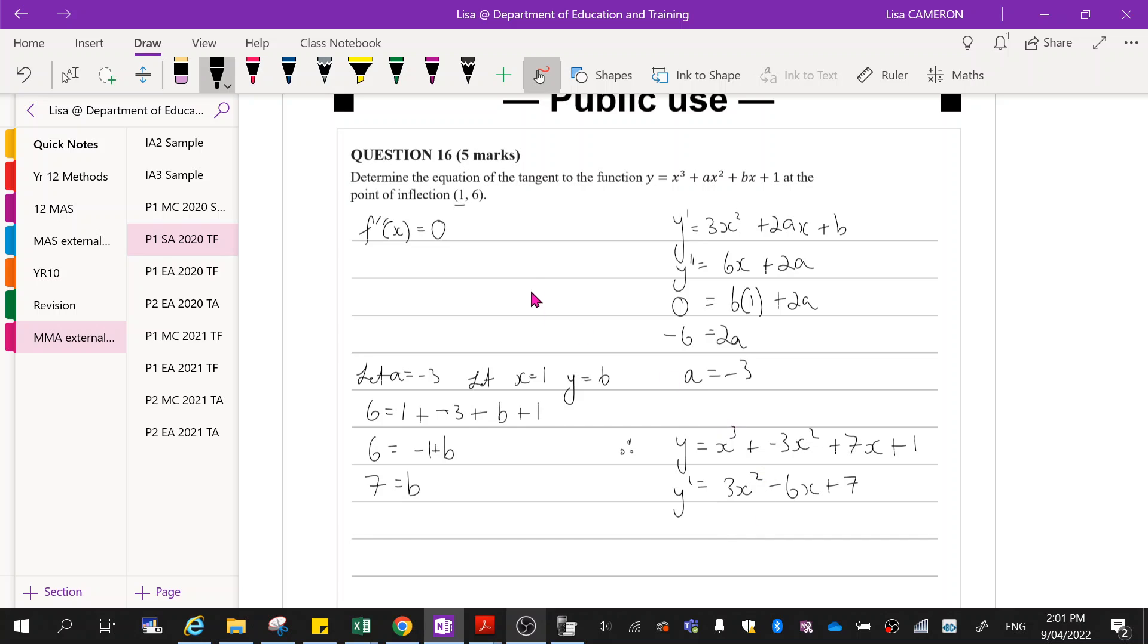And I want to find the gradient when x is equal to 1. So y dash is equal to 3 minus 6 plus 7, which is going to give me 4.